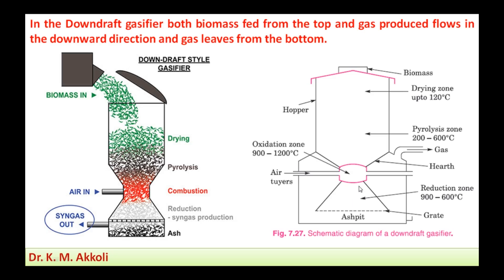For combustion, air enters the combustion zone through the air tuyeres. We can see how the biomass is fed: it passes through the drying zone, pyrolysis zone, and combustion zone, and later reduction takes place, from which syngas is produced. Syngas is a synthesis gas which is actually used in internal combustion engines.